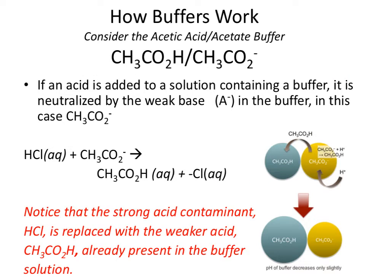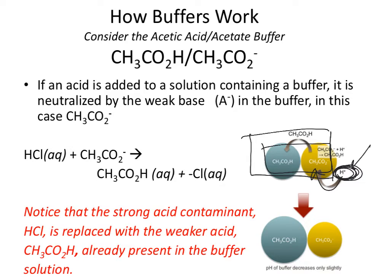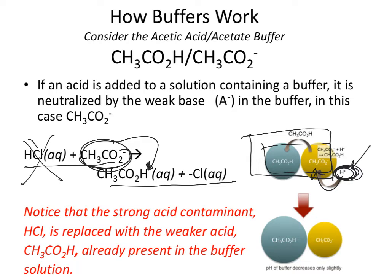Going through the same argument for an acidic contaminant: if we add a strong acid, the first thing is to identify which buffer component reacts. Since acids react with bases, an acid contaminant reacts with the weak base or conjugate base. The component of the buffer that reacts is converted to its conjugate pair, eliminating the strong acid and replacing it with a weak acid, which has less effect on pH.